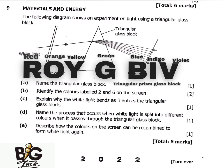Question B says: identify the colors labeled 2 and 6 on the screen. Using the mnemonic ROYGBIV, they have started from orange, followed by yellow. So number 2 is the yellow color, and number 6 is the indigo. Just use the mnemonic ROYGBIV to answer this question — nothing is difficult here.